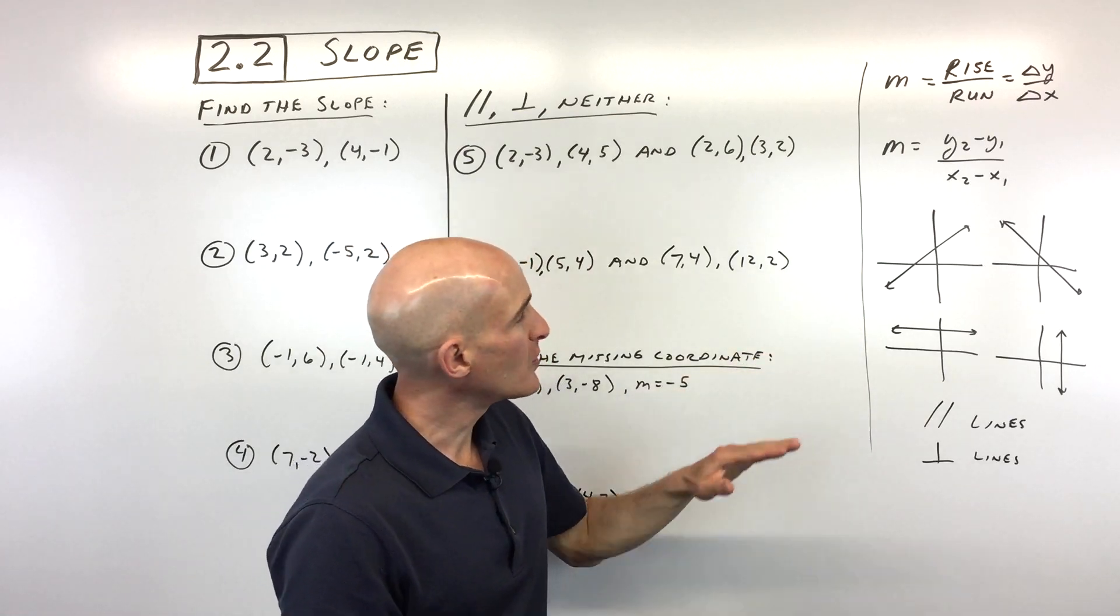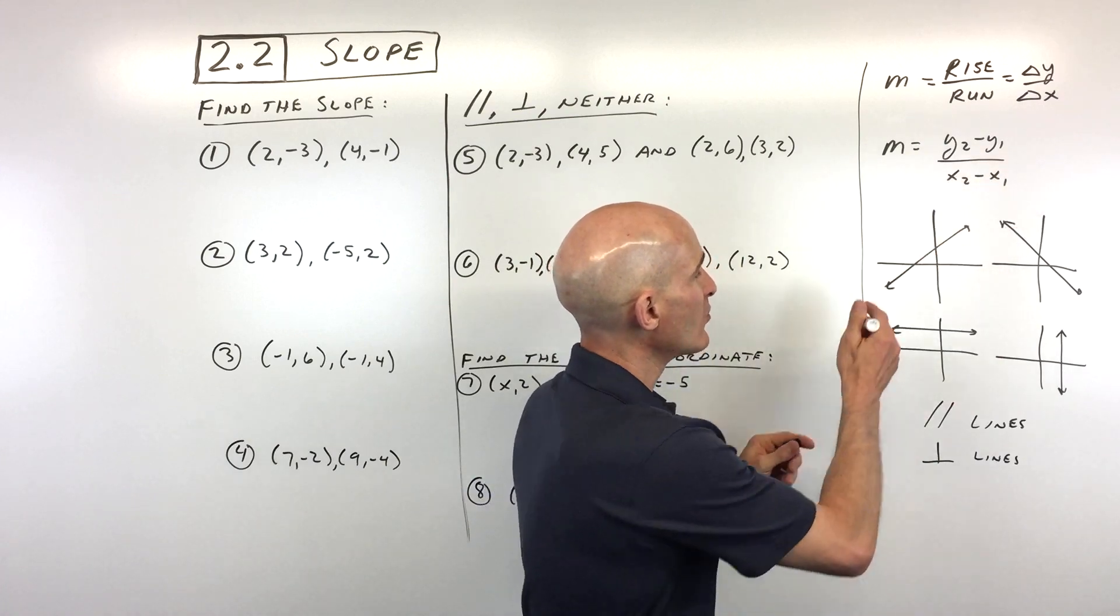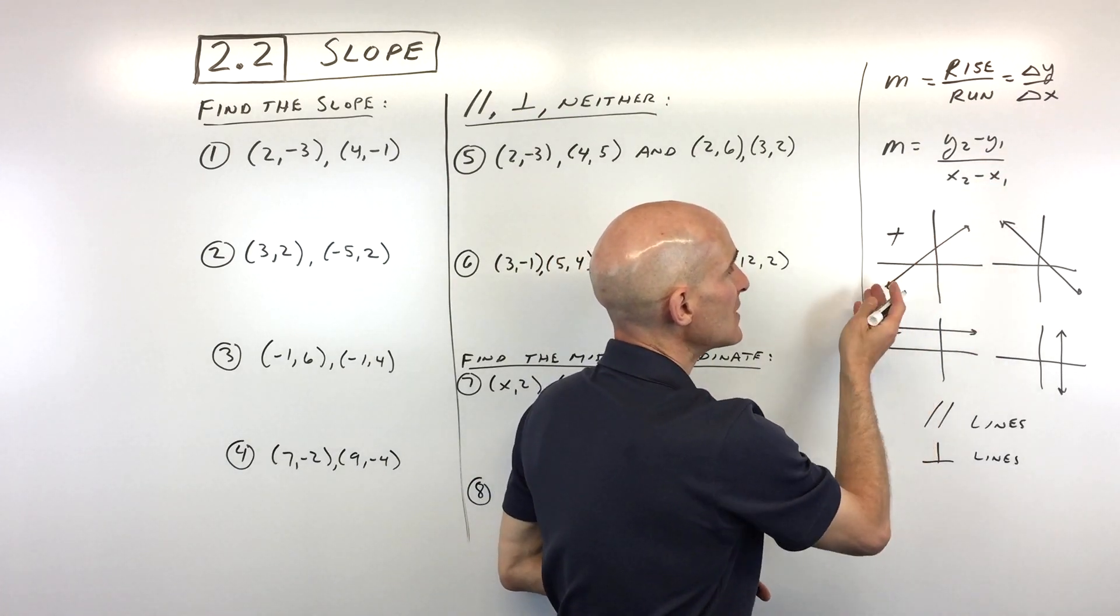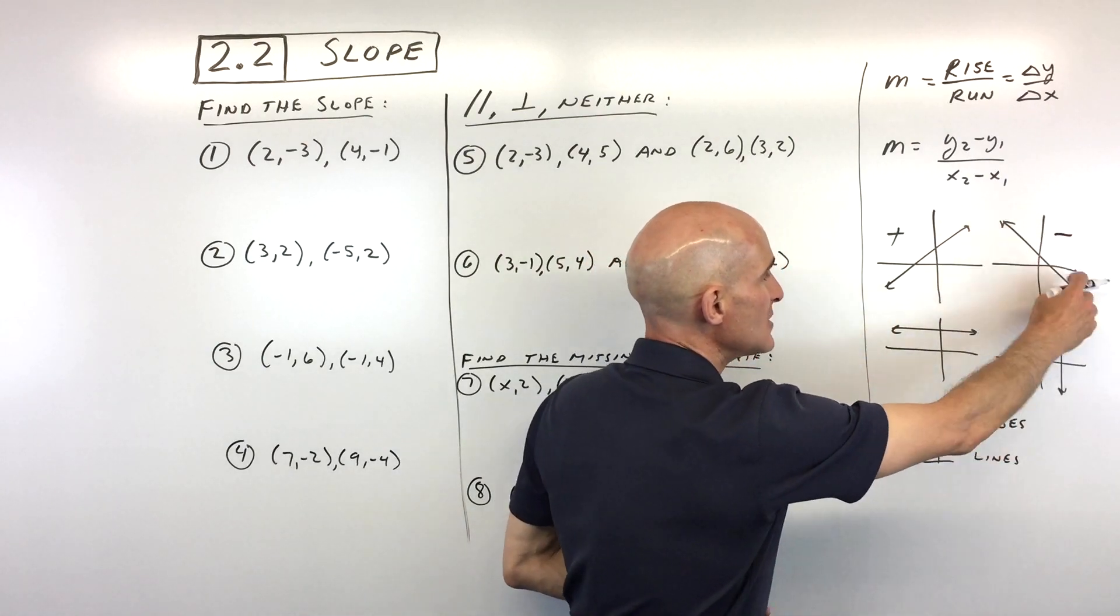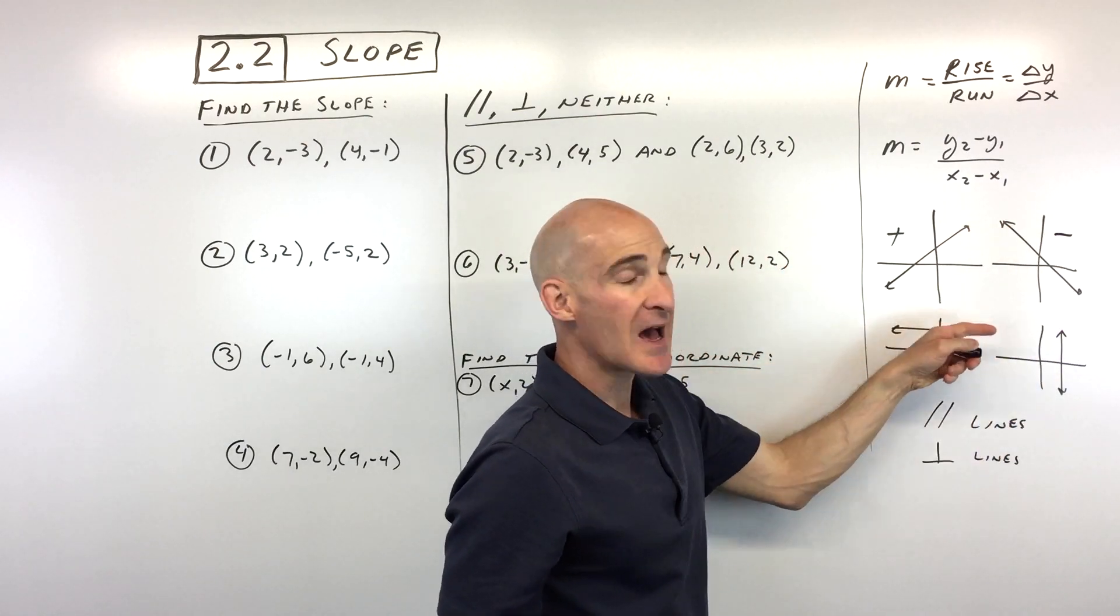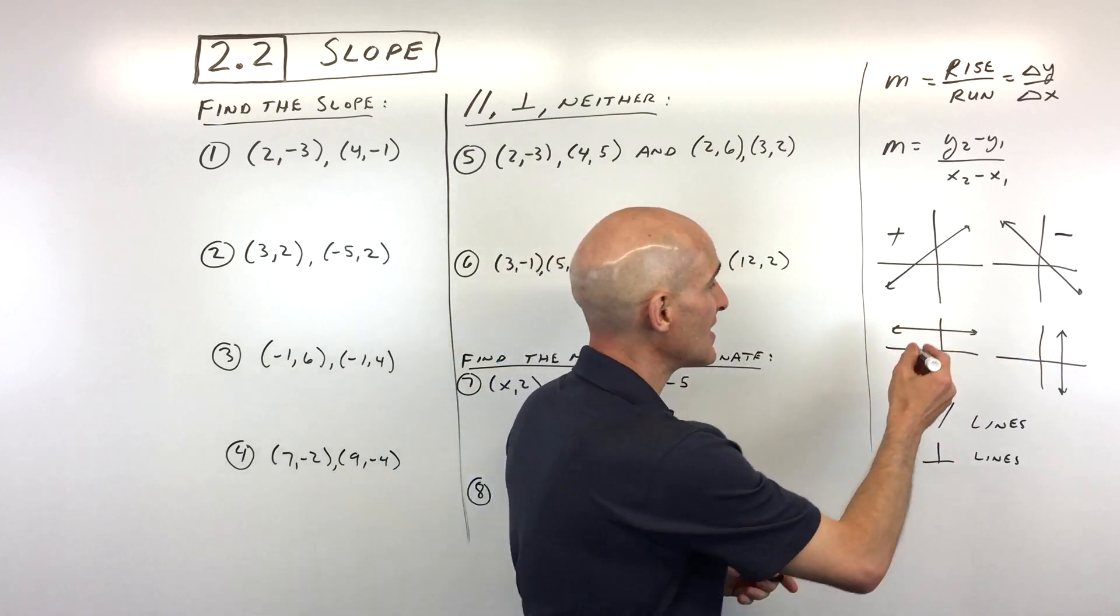And then when we're talking about slope, the slope can be positive, which means it's going up to the right, just so when we read from left to right. So this is positive or increasing. Here you can see it's going down to the right. This is a negative slope, it's decreasing. Here, this one's a horizontal line. It's neither increasing nor decreasing, so this is actually a 0 slope.